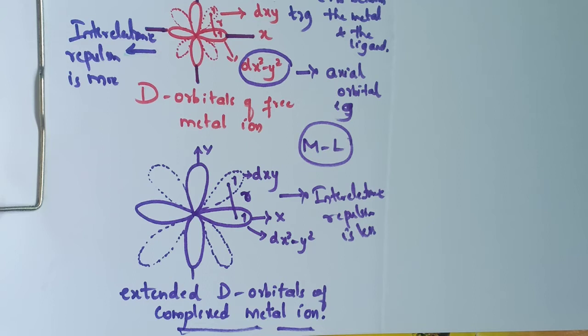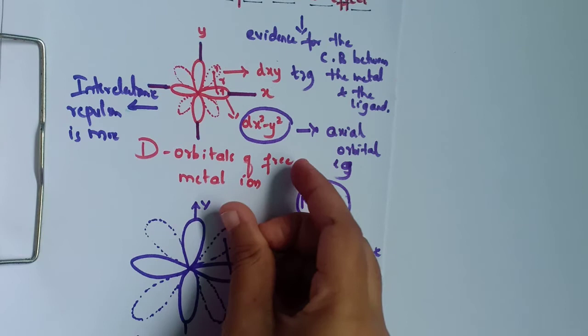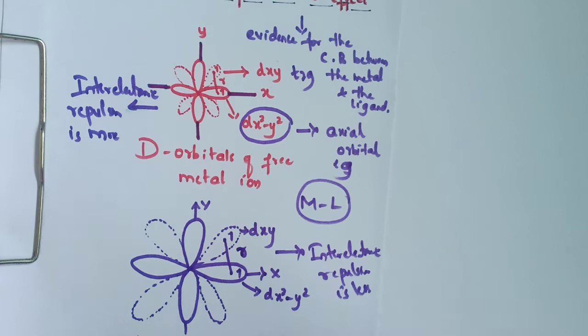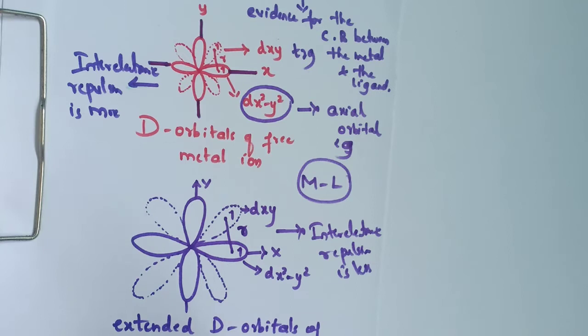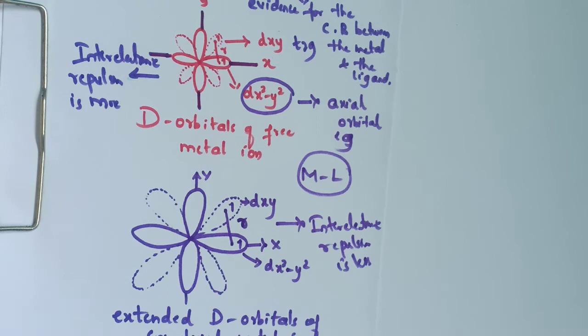To summarize: nephloxetic means cloud expansion. In the d-orbitals of a free metal ion, inter-electronic repulsion is more because the electrons are very close together. But when the ligand approaches a metal to form a complex, inter-electronic repulsion is less because the d-orbitals are extended in the complex metal ion.